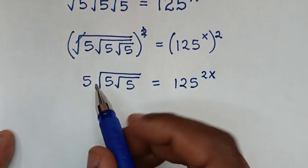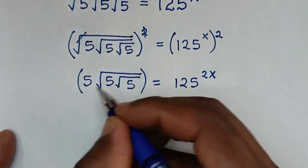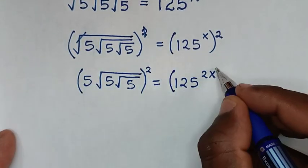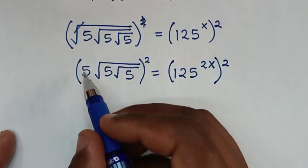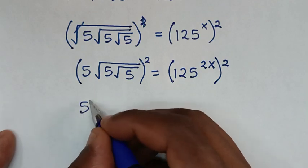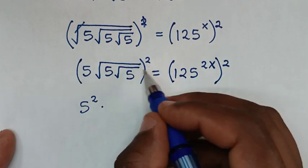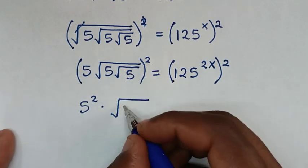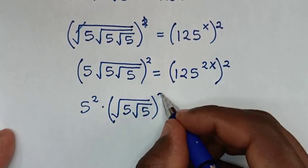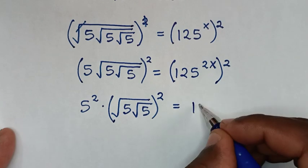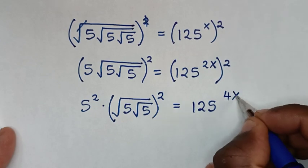To remove the second square root, we square both sides again. Taking the square inside the bracket gives us 5 squared times (√(5·√5)) squared, equal to 125^(4x), since 2 times 2x is 4x.